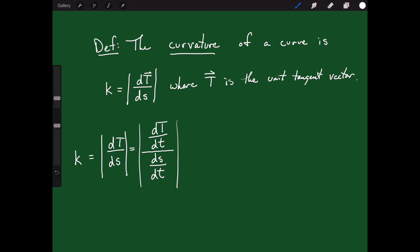ds/dt equals the magnitude of r'(t), which is the speed. So another way of finding curvature is to take the magnitude of the derivative of the unit tangent and divide it by the magnitude of your velocity, and that gives you the curvature.